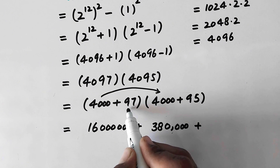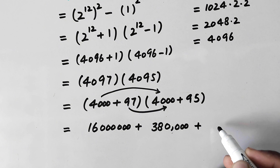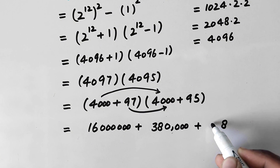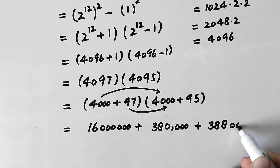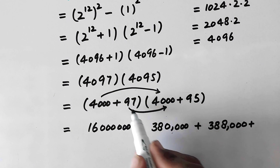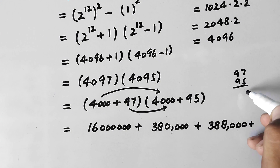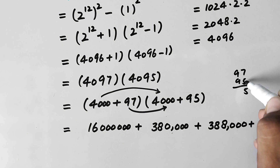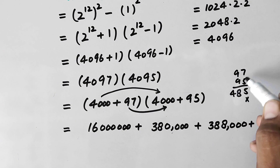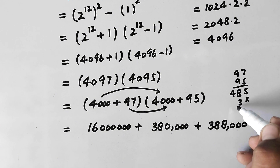Now we multiply 97 by the two values. First, 97 times 4000: 7 times 4 is 28, carry 2; 9 times 4 is 36 plus 2 equals 38, giving 388,000. Then we multiply 97 times 95: 7 times 5 is 35, carry 3; 9 times 5 is 45 plus 3 equals 48. Then 7 times 9 is 63, carry 6; 9 times 9 is 81 plus 6 equals 87, giving 9,215.